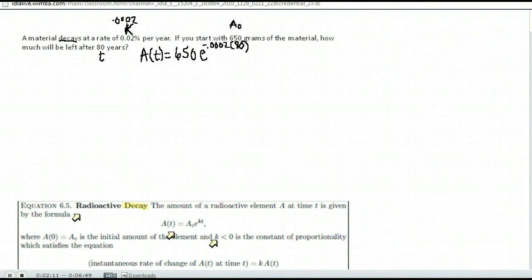So again, order of operations, super important here. We want to find out what that exponent is first. And I get 0.016, negative 0.016.